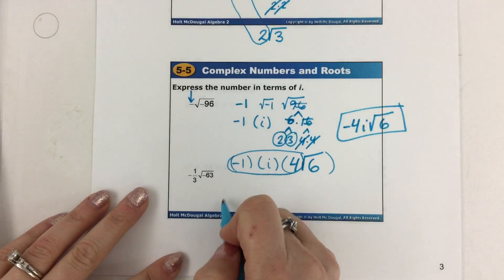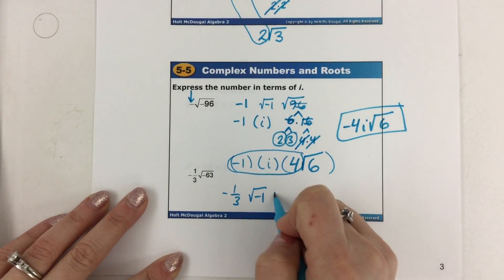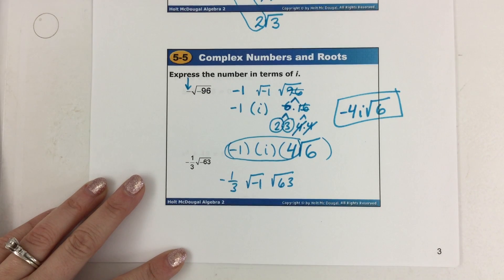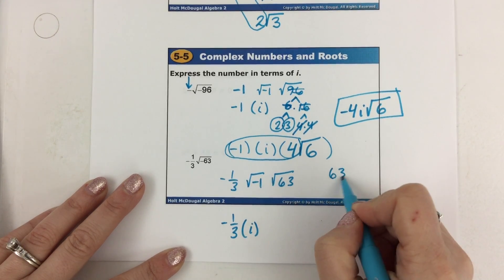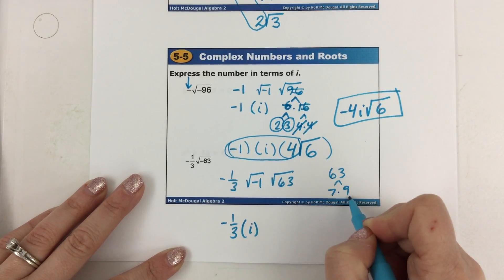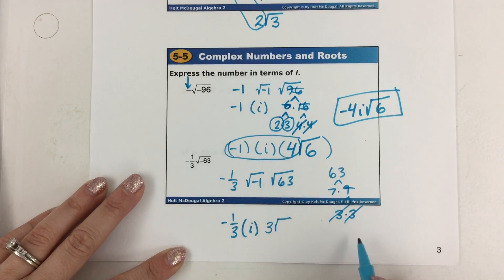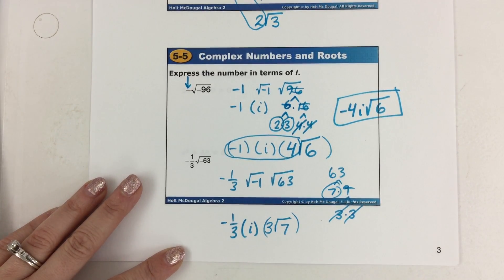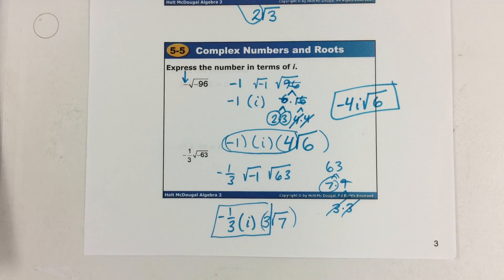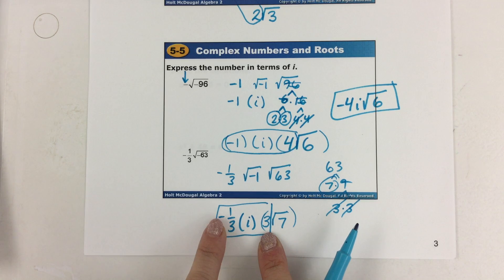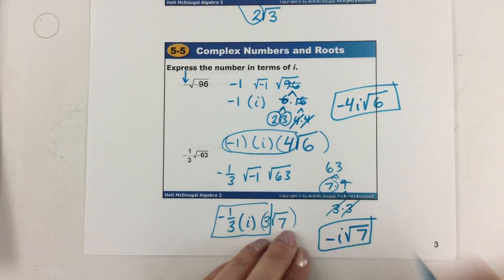Next one — we have negative 1 third out front. Negative underneath the radical, so pull out a negative 1, making the 63 positive. Now I have three pieces: negative 1 third, i, and the square root of 63. 63 is not a perfect square — 63 is 7 times 9, and 9 is 3 times 3. I can cross off two 3s, writing a 3 on the outside; 7 cannot be crossed off, so it stays inside. Negative 1 third times 3 is negative 1; negative 1 times i is negative i. So the answer is negative i times the square root of 7.